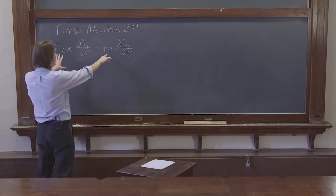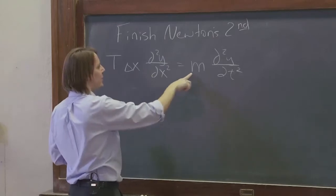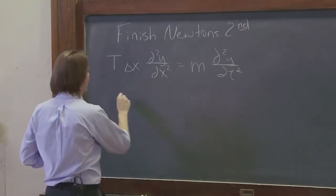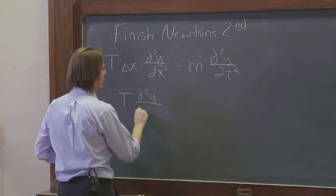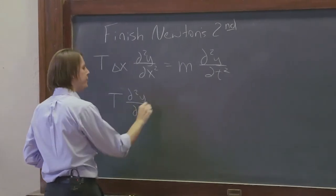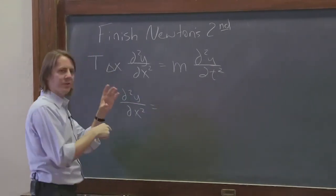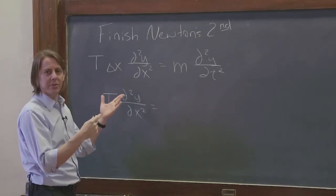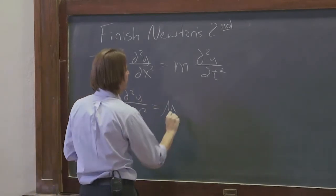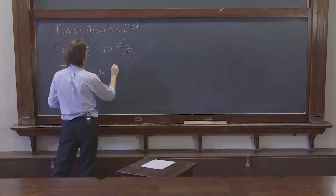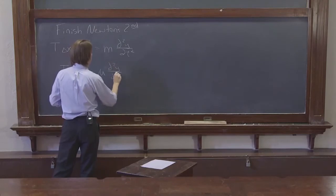So we have an opportunity here to get back to our fundamental properties of the string by bringing this delta x under the mass because that would be T d²y/dx² and the mass over delta x, that's the mass per unit length for this little piece. So we could write that as mu and then d²y/dt².